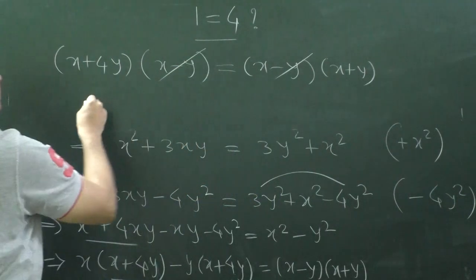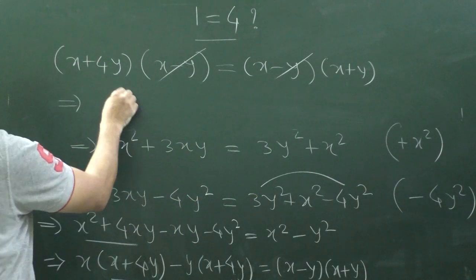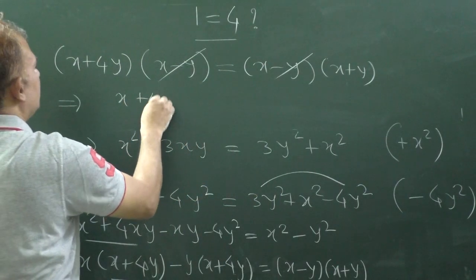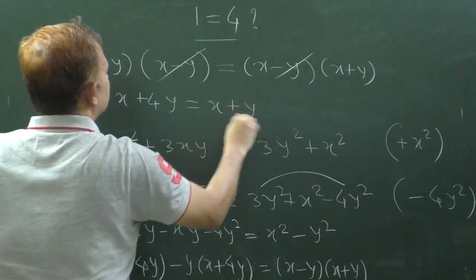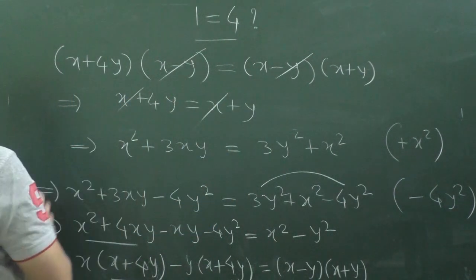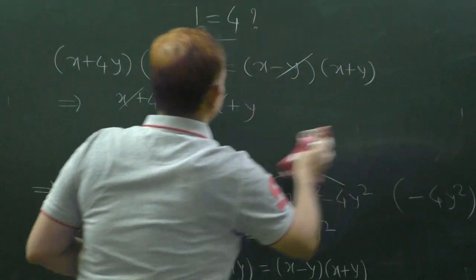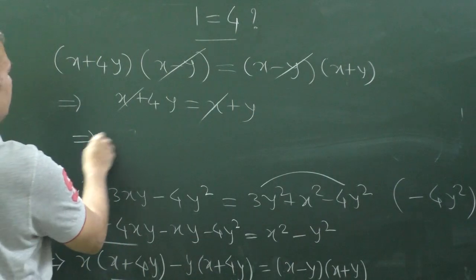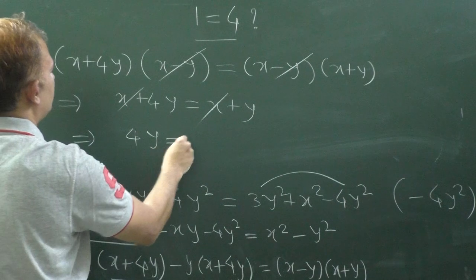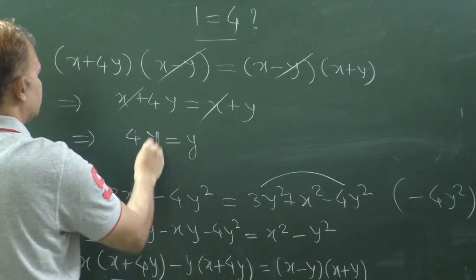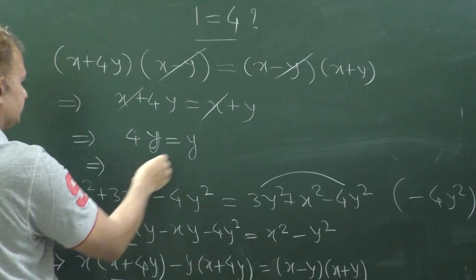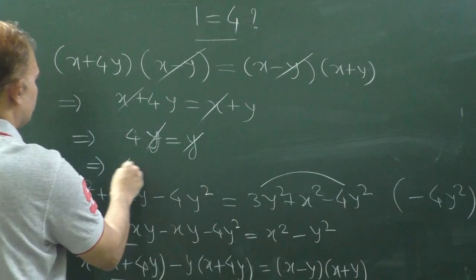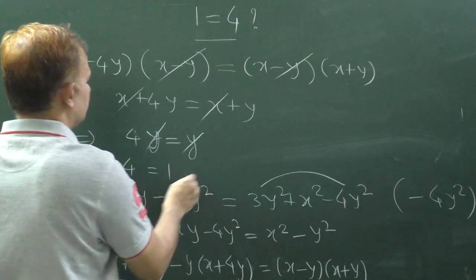X minus Y get cancelled. X plus 4Y is equal to X plus Y. X cancelled. 4Y is equal to Y. On cancelling both sides, 4 is equal to 1. So see.